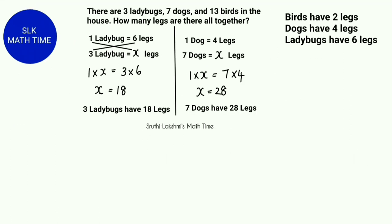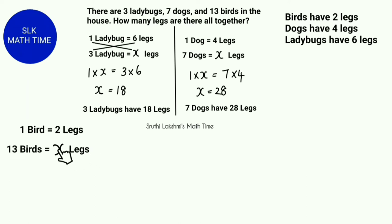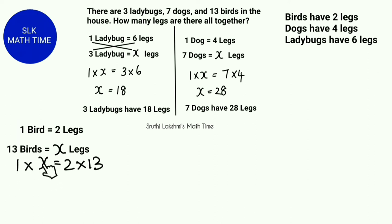Now let's see for 13 birds. Remember, 1 bird has 2 legs. So 13 birds equals x legs — we have to find x. Let's cross multiply: 1 into x and 2 into 13. Both of these equations are equal. Since 1 into x has a variable, we solve the other one: 2 into 13 is 26. So x must equal 26.